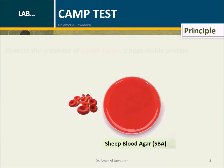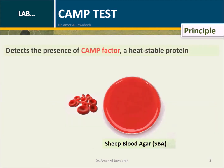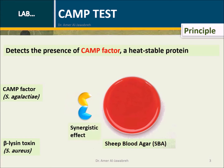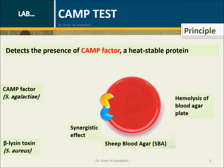Principle: Detects the presence of CAMP factor, a heat-stable protein. Streptococcus agalactiae produces CAMP factor that acts synergistically with the toxin beta-lysin produced by Staphylococcus aureus to cause hemolysis of blood agar medium.